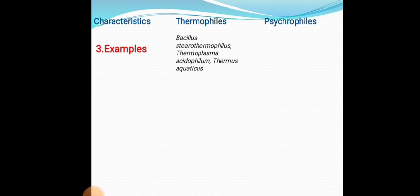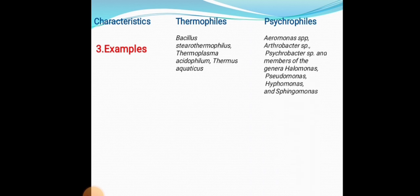Examples of thermophiles include Bacillus thermophilus, Thermoplasma acidophilum, Thermus aquaticus, and others. Examples of psychrophiles include Amoeba species, Arthrobacter species, Psychrobacter species, and members of the genera Halomonas, Pseudomonas, Hyphomonas, and Sphingomonas.